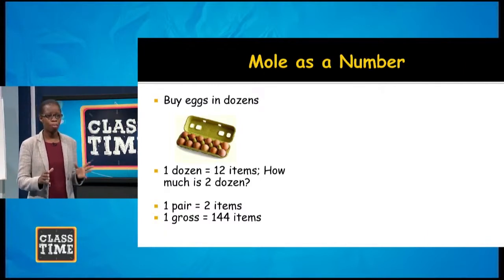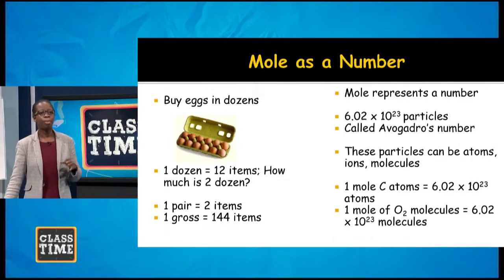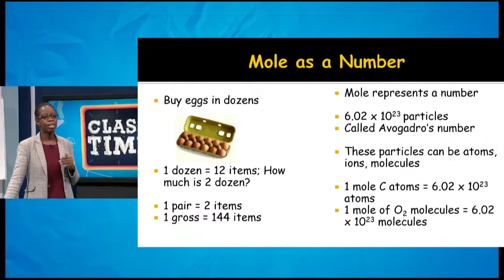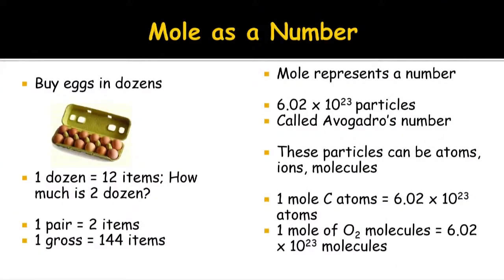So what number does the mole represent? The mole represents 6.02 × 10²³ particles — a very big number — and that number is called Avogadro's number, named after Amadeo Avogadro. These particles can be atoms, ions, or molecules. A mole of atoms, a mole of ions, or a mole of molecules each contains 6.02 × 10²³ particles. It is a constant value, also called Avogadro's constant.